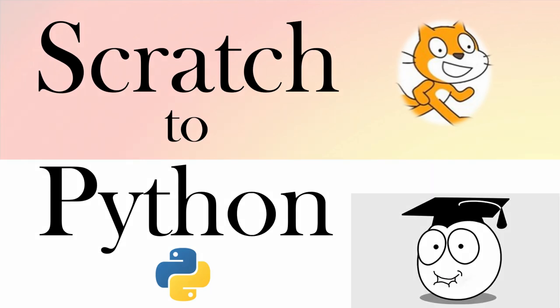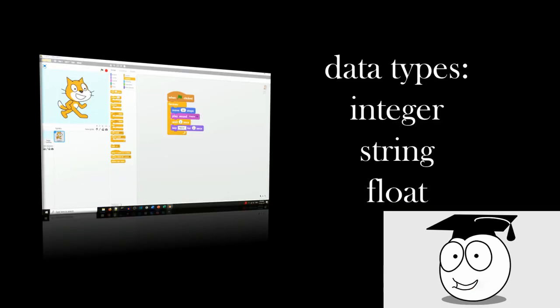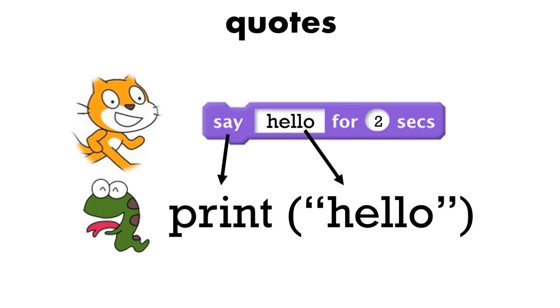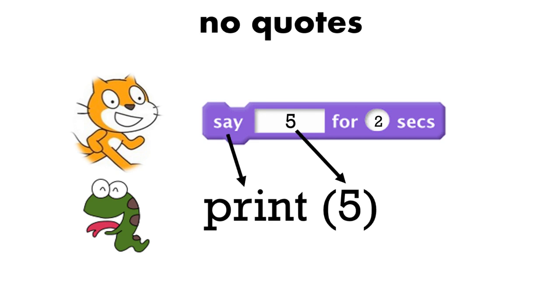To learn Python after Scratch we need to understand data types, so we're going to look at integers, strings, and floats. Here's our Scratch block with 'say hello for two seconds'. In Python, the equivalent is print with hello in quotes in brackets — notice those quotes. In the next example there aren't any quotes: we've got 'say five for two seconds', so we've got five in the brackets after print. Hello had quotes and five does not — so what's the difference?